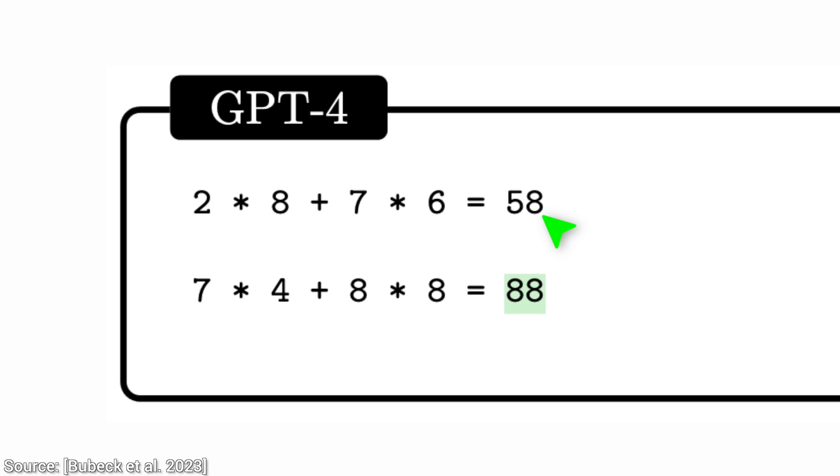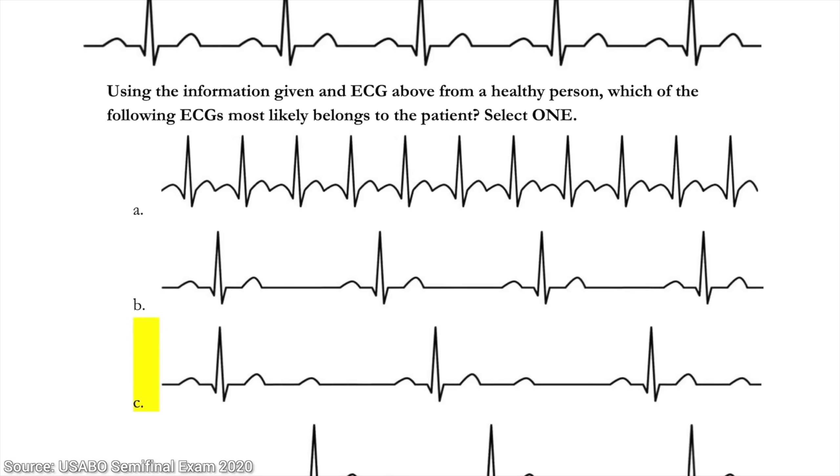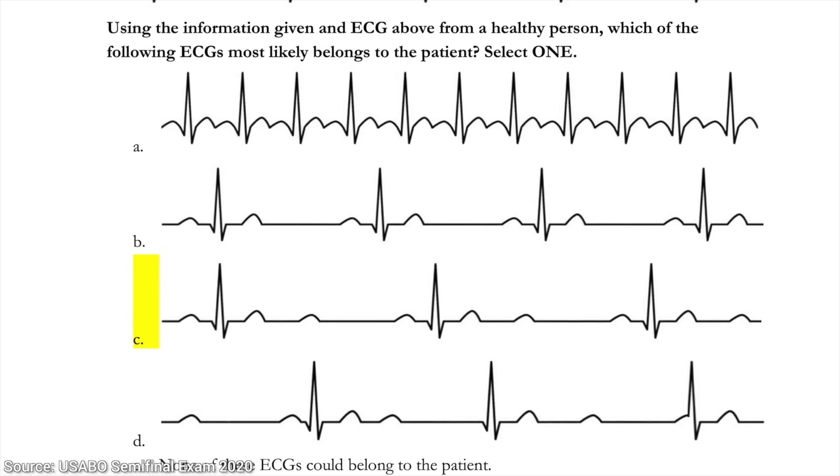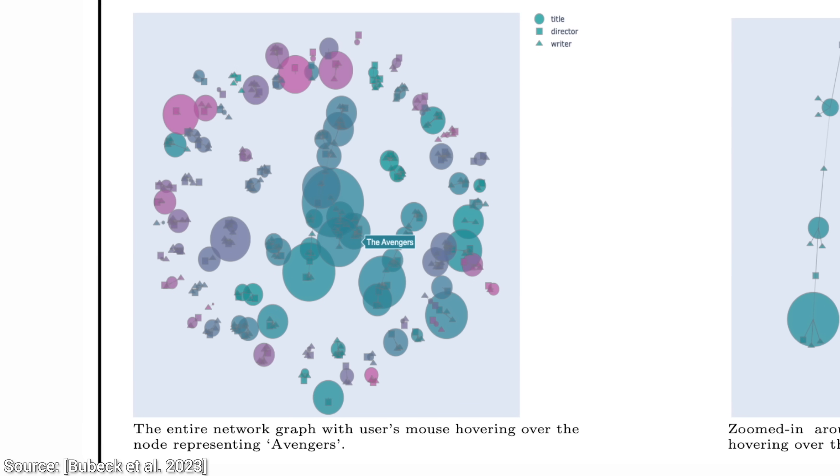But then, when we show it one of the simplest math problems you can imagine and ask for the result of another one, it fails. What in the world is happening? This AI can read and evaluate electrocardiograms as well as some of the smartest humans out there, but it often can't solve a problem that a child could easily solve. So this is the age we live in today.